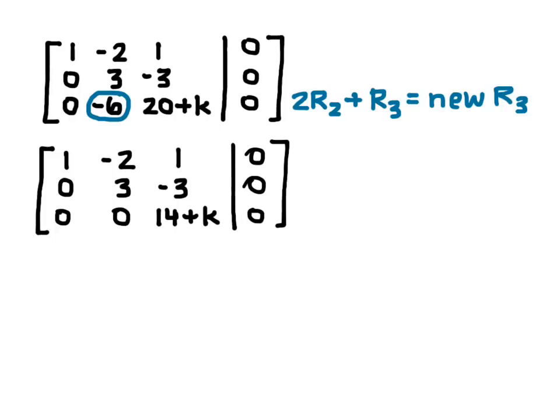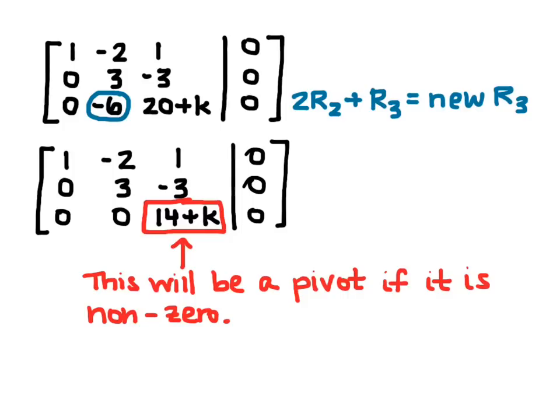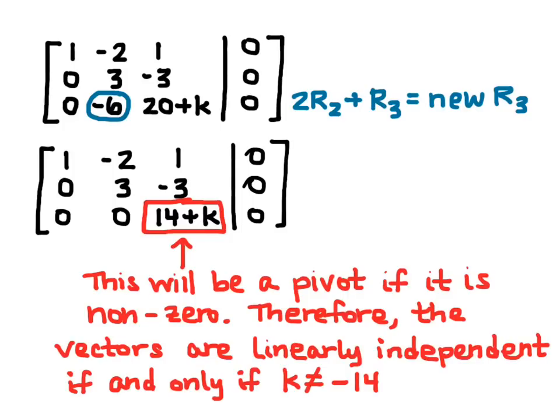Now recall that this system, or these 3 vectors will be linearly independent if there's a pivot in each X column. So I'm going to focus on the X3 column, and I know that 14 plus K will be a pivot only if it's non-zero. So this will be a pivot if it's non-zero, which tells me that the vectors are linearly independent if and only if K is not equal to negative 14. So that's the answer that the problem is looking for.